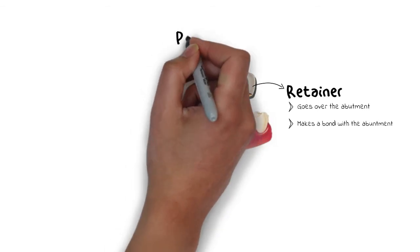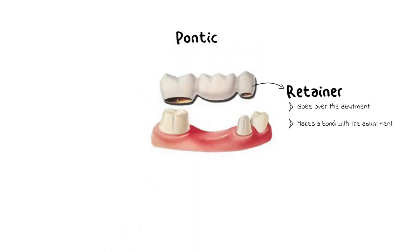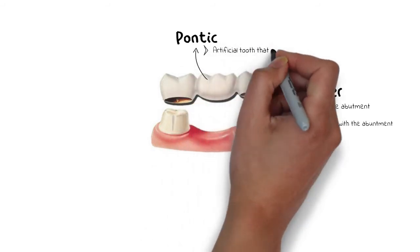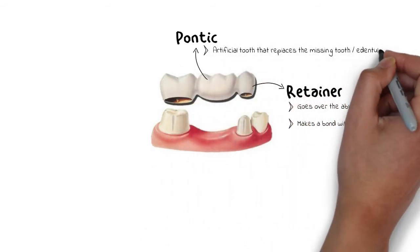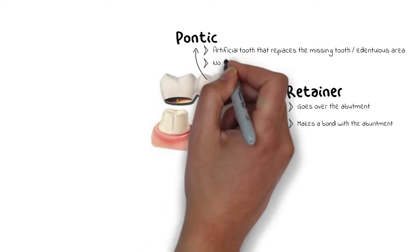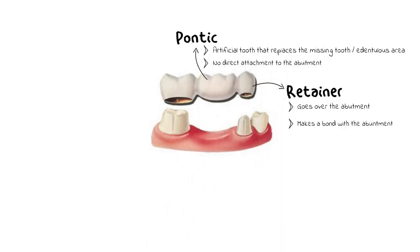Next we have the pontic. The pontic is an artificial tooth that is going to replace the edentulous space. As you can already see, it has no direct attachment to the abutment and relies on the retainer for support and stability against the occlusal forces.